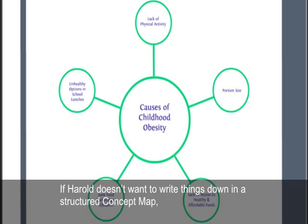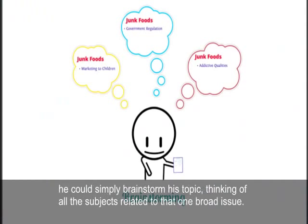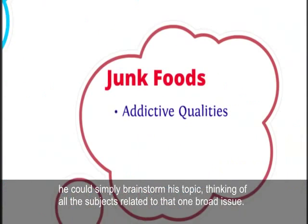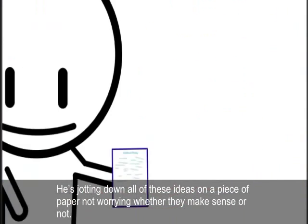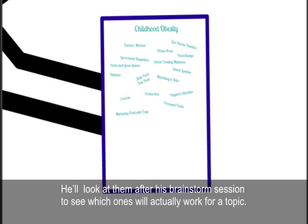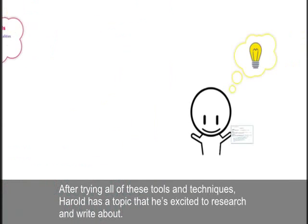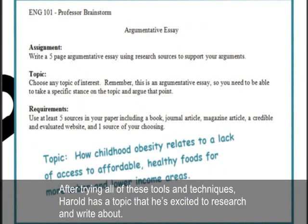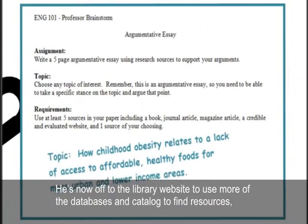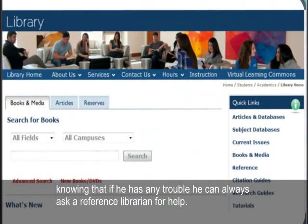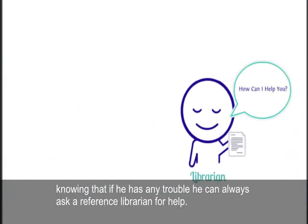If Harold doesn't want to write things down in a structured concept map, he could simply brainstorm his topic, thinking of all the subjects related to that one broad issue. He's jotting down all of these ideas on a piece of paper, not worrying whether they make sense or not. He'll look at them after his brainstorm session to see which ones will actually work for a topic. After trying all of these tools and techniques, Harold has a topic that he's excited to research and write about. He's now off to the library website to use more of the databases and catalog to find resources, knowing that if he has any trouble, he can always ask a reference librarian for help.